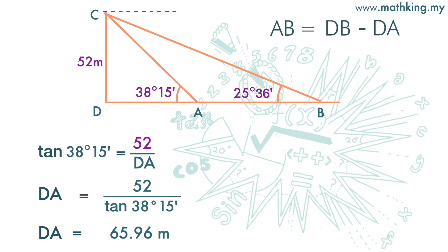Next, we want to find DB. The opposite of 25 degrees 36 minutes is 52 meters. DB is the adjacent. Again, we are going to use tangent because tangent is opposite over adjacent. We plug in the numbers.